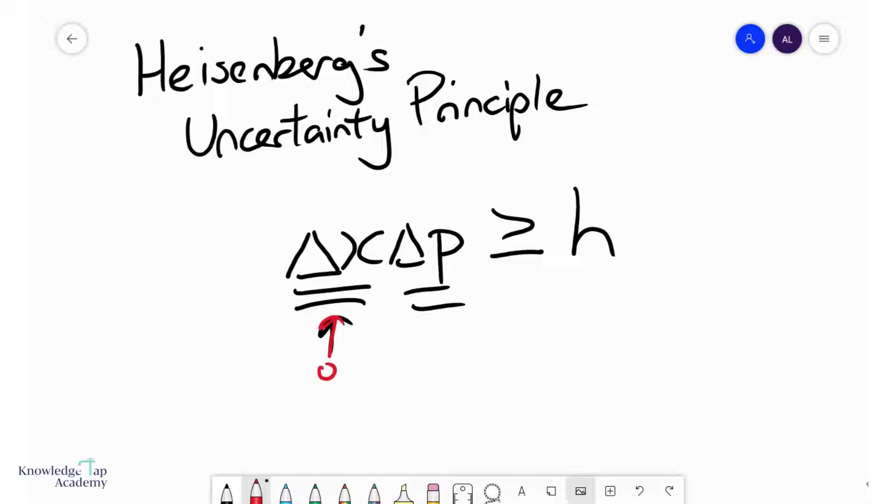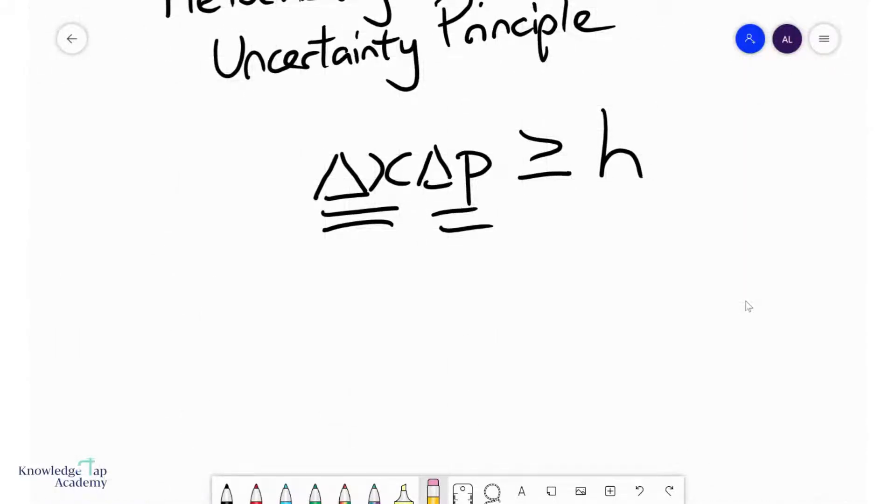Of course, if one of these things goes to zero, that doesn't make sense. Basically, it's saying that there's always going to be some uncertainty in a particle's position and its momentum.